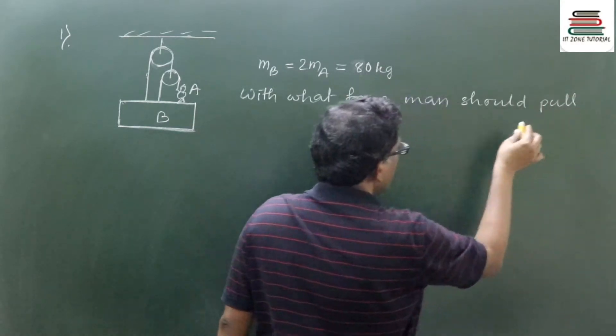To calculate T, eliminate N by doing equation 1 minus equation 2. Taking g as 10: 800 minus T (N cancels) gives 3T minus 400, so 4T equals 1200, therefore T equals 300 Newton. The tension with which the man should pull the rope is 300 Newton.